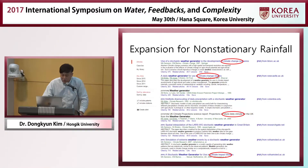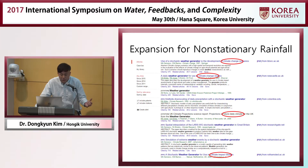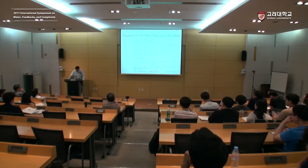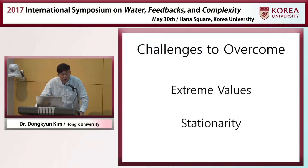Also, climate change basically assumes non-stationarity of the rainfall time series. But for the Poisson cluster rainfall model, we use one single set of statistics, which is stationary. So two challenges to overcome are: modifying the model to generate extreme values well, and resolving the matter of non-stationarity.